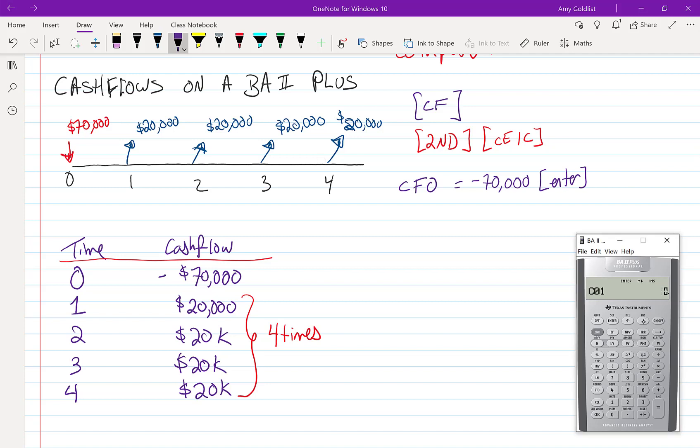Our next cash flow, CO1 was $20,000. Enter. And that happened many times. So that's something neat to note. The calculator lets us do that. So the frequency is four. So I'm going to press enter.